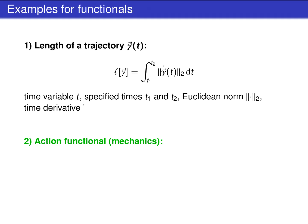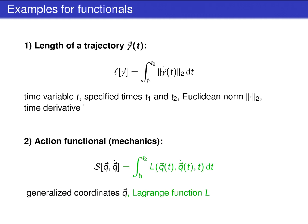Another important example is the action functional from theoretical mechanics. It is a functional s of the time dependent generalized coordinates q vector, and their time derivatives q vector dot. This functional is given as an integral of the Lagrange function l over time t, from a time t1 to a time t2. The Lagrange function depends on the generalized coordinates q vector, their time derivatives q vector dot, and time t.